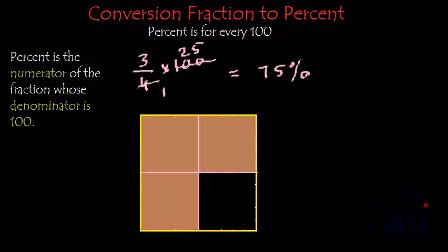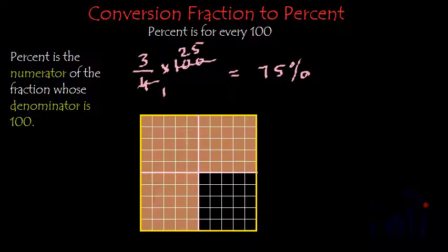So if I divide it into 100 parts, it will look something like this. And how many parts are there which are colored in brown? Total are 100 and these many are 1, 2, 3, 4, 5, 1, 2, 3, 4, 5, 5 by 5, 25. 25 are still in black.